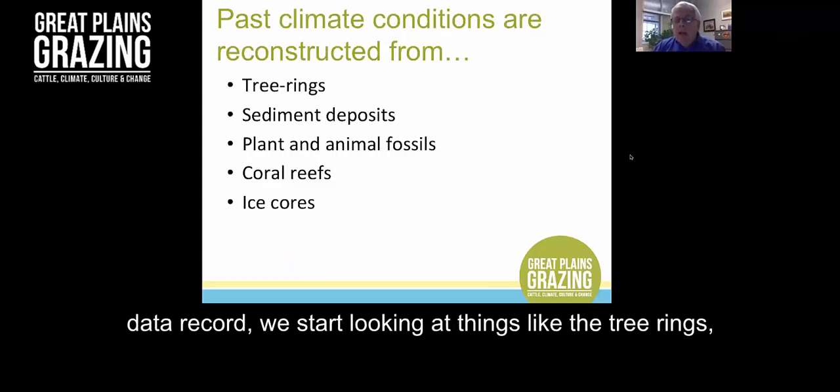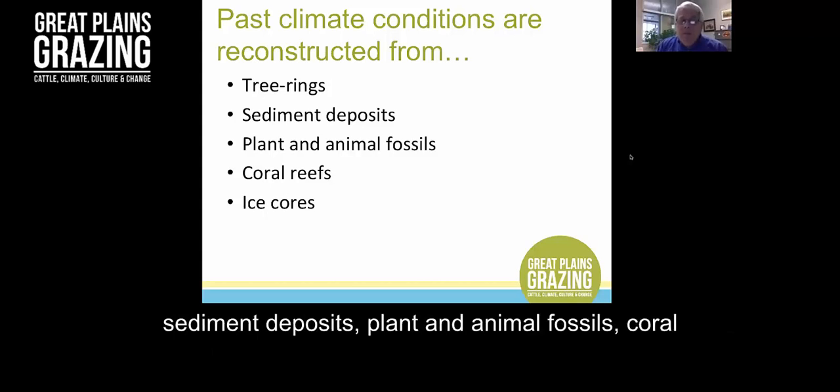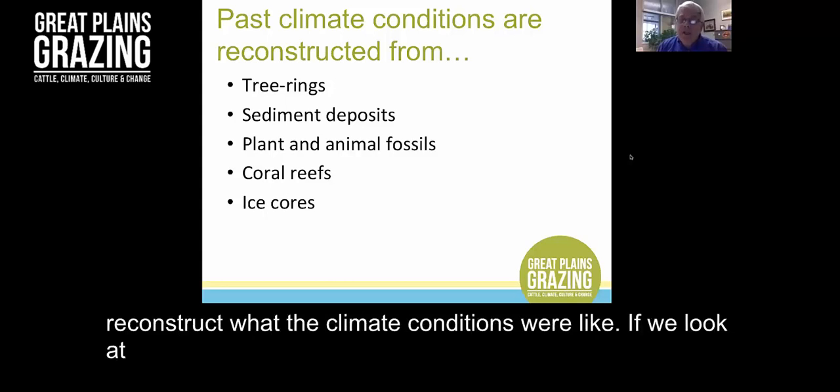When we go back past our data record, we start looking at things like tree rings, sediment deposits, plant and animal fossils, coral reefs, and ice cores. All of these things are used to reconstruct what the climate conditions were like.